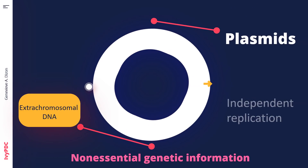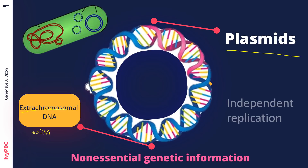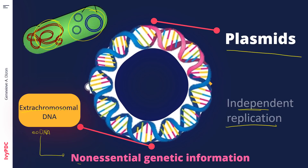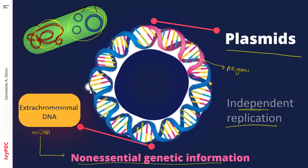Let's now talk about plasmids. These are extra-chromosomal DNA, abbreviated as ECDNA — extra-chromosomal because these are DNA found off the chromosome of the prokaryote. That is why they can replicate independently and can be passed down from one generation to another. ECDNA contains non-essential genetic information, but the plasmids contain antibiotic-resistant genes, which confer resistance to different kinds of antibiotics, making the organism stronger.